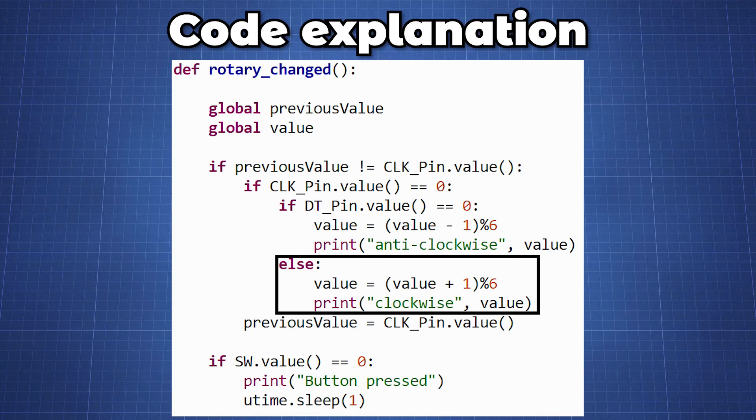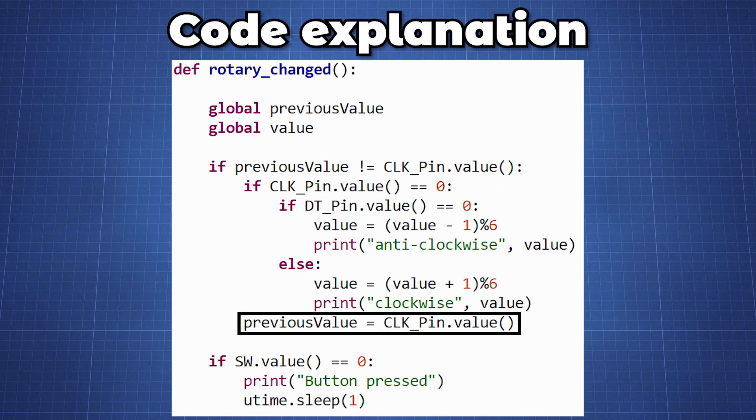Else if our DT pin was still one we know it turned clockwise and we set our value equal to value plus one and then we take the modulo six and we print out clockwise with the value. Then we set our previous value equal to the clock pin value to break the condition.